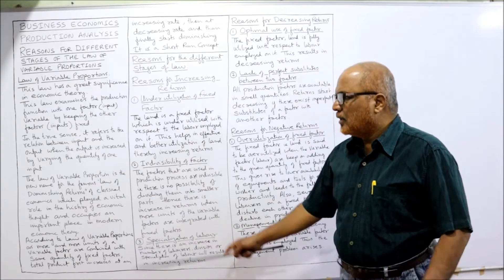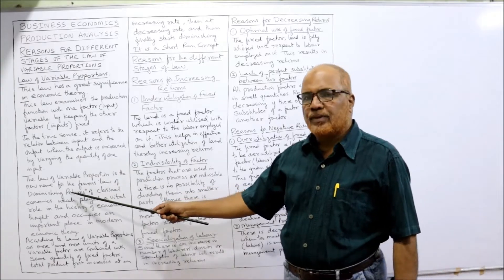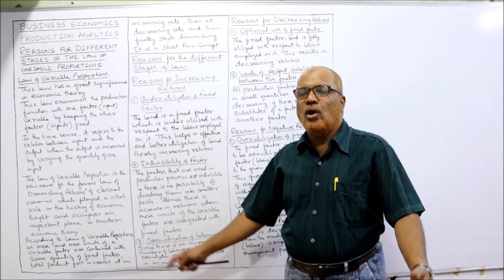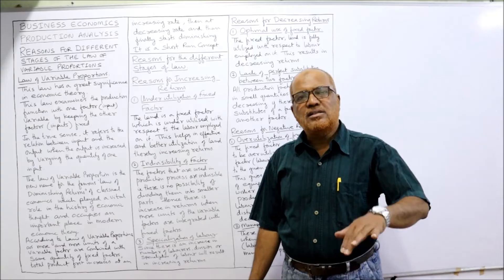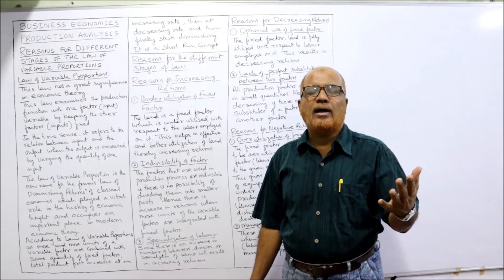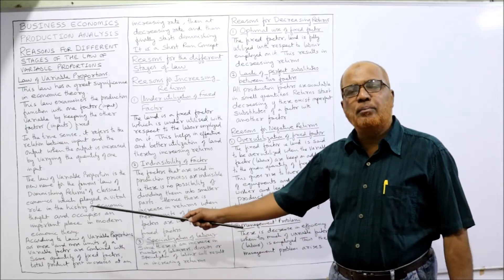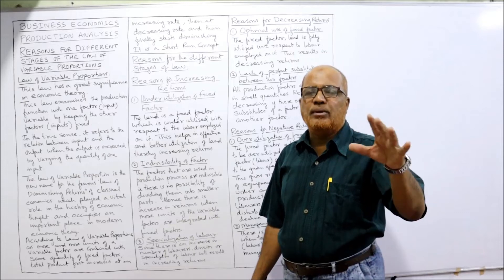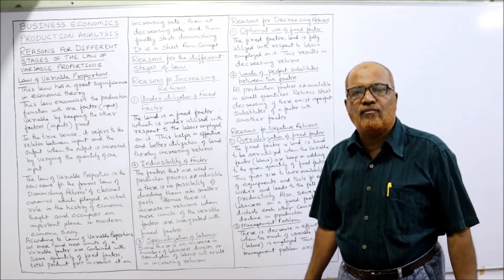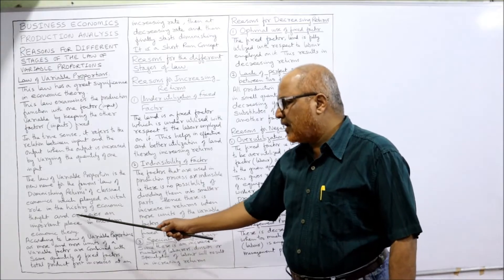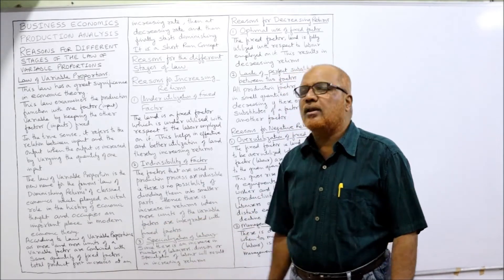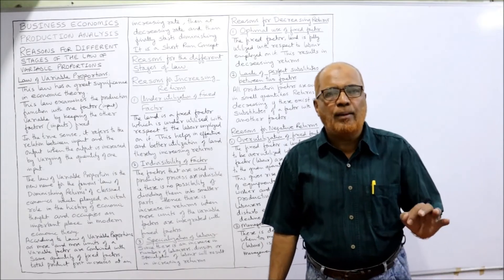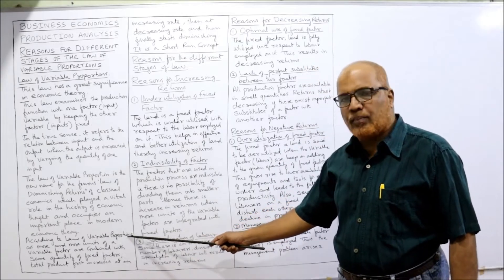The law of variable proportion is the new name for the famous law of diminishing returns of classical economists. This law is not a new one — it is the same old law. According to classical economics it was called the law of diminishing returns; now the name has been changed to law of variable proportions. It occupies an important place in modern economic policy.